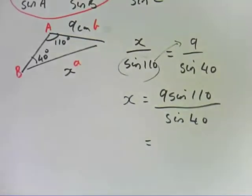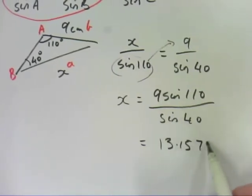So I will calculate that and be back with you in just a second. All right, so that comes out at X being 13.1571 centimeters. So that's finding a side using the sine rule. What if we need to find an angle? It's really the same process.